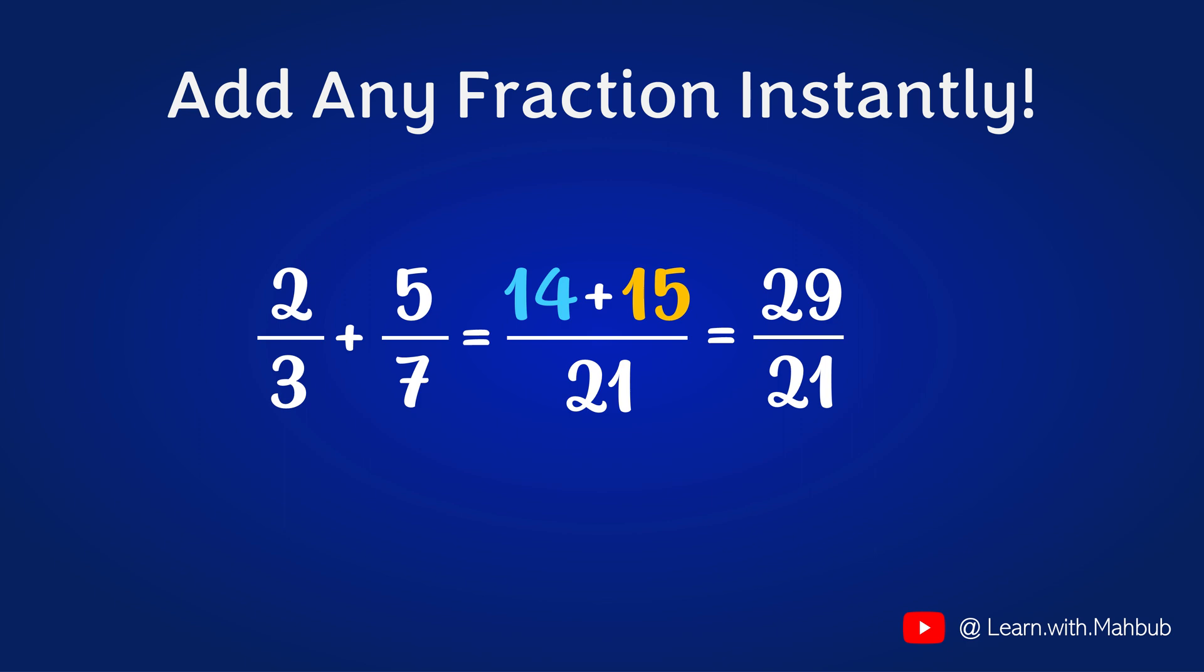So the answer is 29 by 21. Let's simplify it further. 29 divided by 21 is 1 and it gives us a remainder of 8. So 1 and 8 by 21.